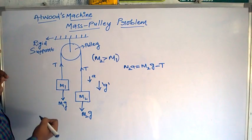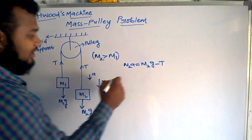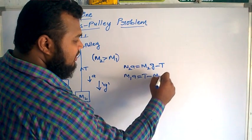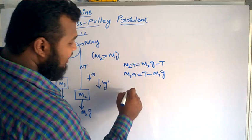Similarly, the force acting on this one, since it is moving up, can be written as m1a equals T minus m1g. If you add up these two, T gets cancelled.